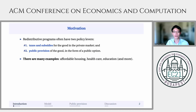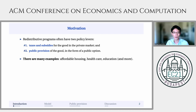The starting point of this paper is the observation that redistributive programs often have two policy levers. First, the designer might tax or subsidize a good sold in the private market. On the other hand, the designer might alternatively publicly provide the good in the form of a public option. One such example is affordable housing, where local housing authorities might either provide vouchers for folks to rent in the private market, or directly provide affordable housing units. There are many other examples, including examples in healthcare and in education.